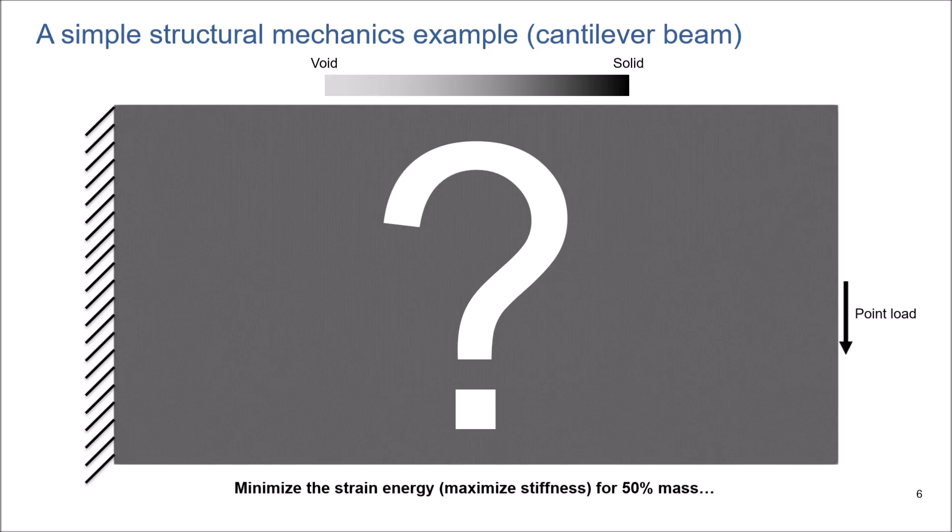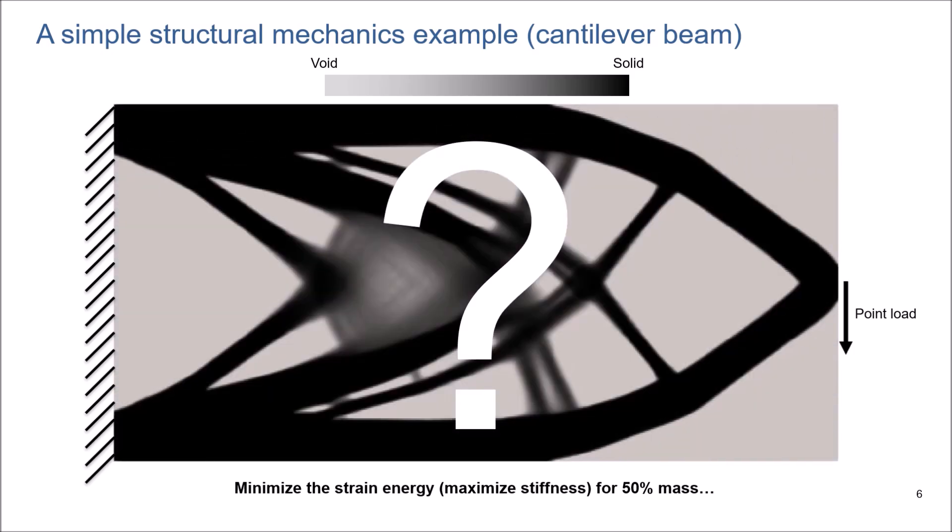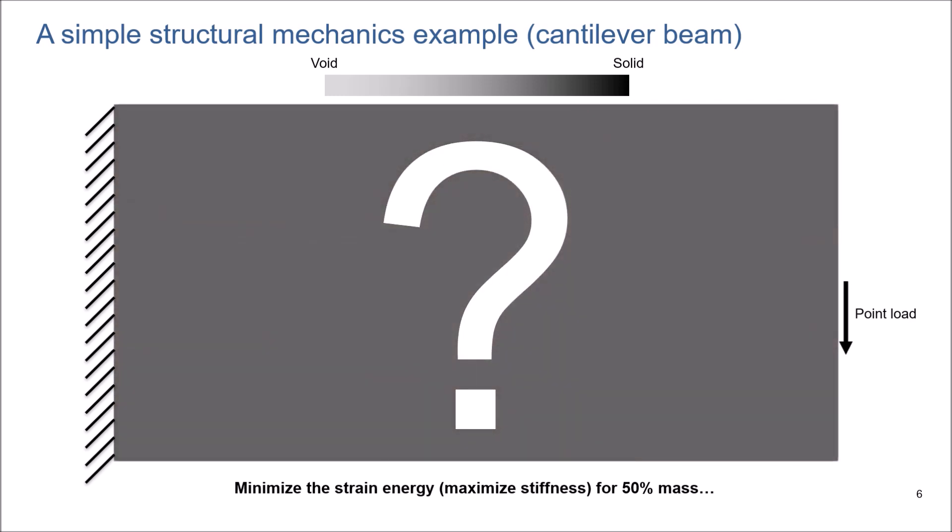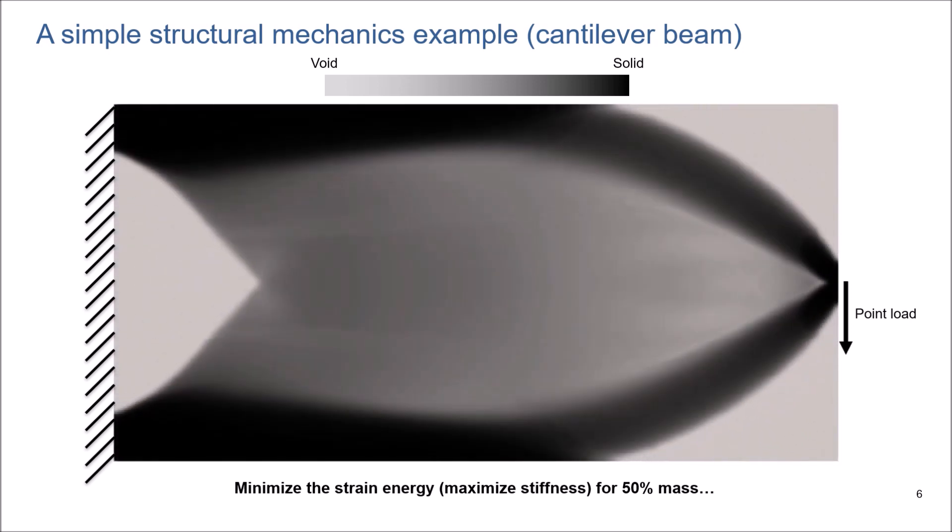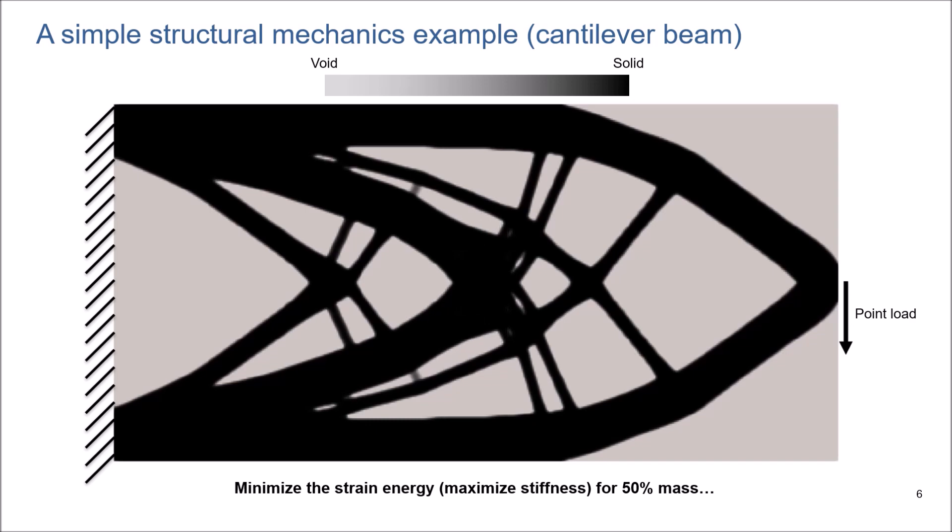The question is how to distribute this 50% material inside this cantilever beam to achieve maximized stiffness for the structure. Of course, one could use the traditional approach and put a bunch of holes inside the beam to achieve 50% material usage. But, the question is, for this geometry, does this structure have maximized stiffness? The answer is no because topology optimization has a better solution for this optimization problem that could give us an optimized design with maximized stiffness or minimized strain energy.